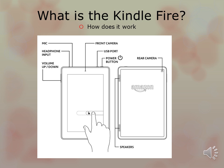Here we have what looks like the Kindle Fire, showing you where everything is located. You've got your mic and headphone input at the top as well as your front camera. You've got a USB port so you can plug it in and transfer information to or from your computer. You also have your power button, a slide bar, a rear camera, and speakers. Why don't you right now minimize this and take a look at your Kindle to see if you have some differences, depending on whether you're using an earlier version versus the Kindle Fire HD 7 or HD 8.9.